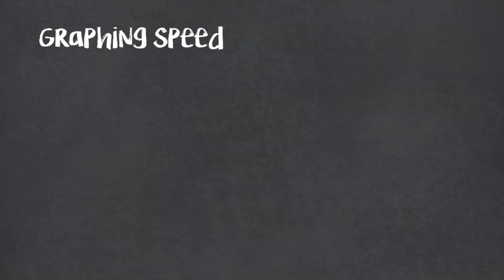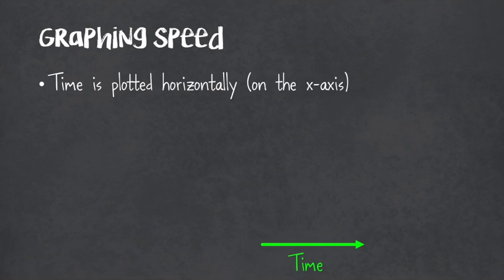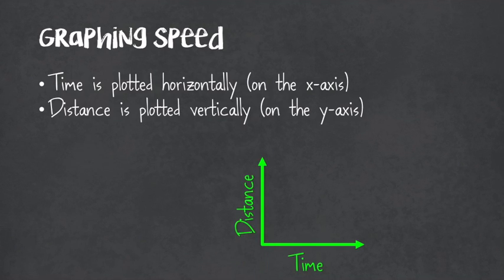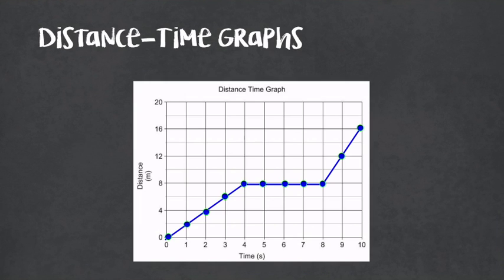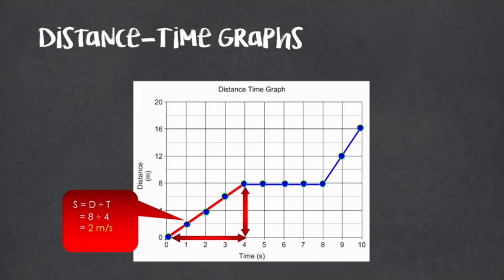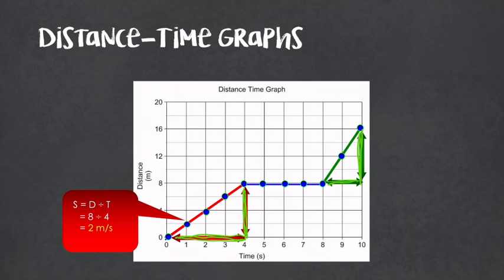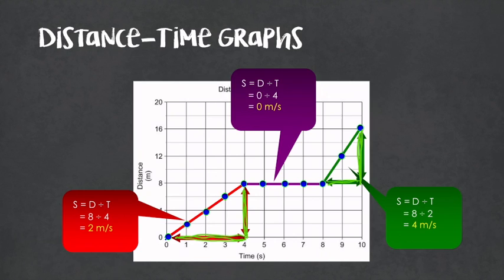In addition to calculating speed, we also need to know how to graph speed. Time is usually plotted horizontally on the x-axis, and distance is plotted vertically on the y-axis. The slope of our line is the speed. For example, here we have a distance versus time graph with a couple of different speeds. For the first part, the vertical change is 8 divided by a horizontal change of 4, giving 2 meters per second. At the end, a vertical change of 8 and horizontal change of 2 gives 4 meters per second. In the middle, no change in distance means 0 meters per second — we are not moving for those 4 seconds.